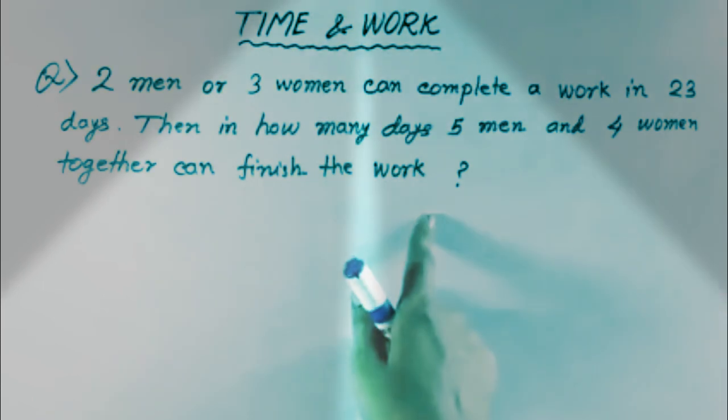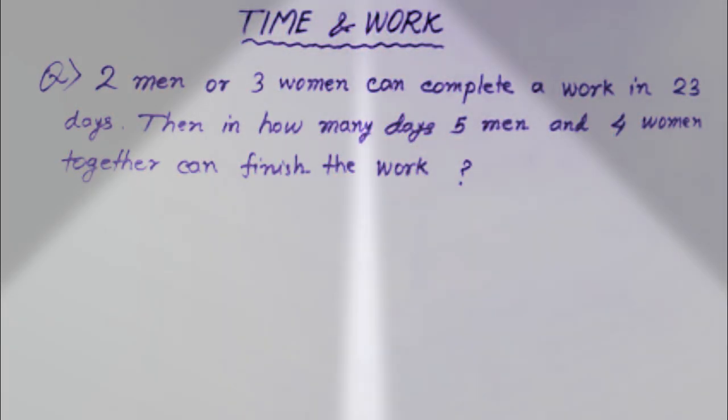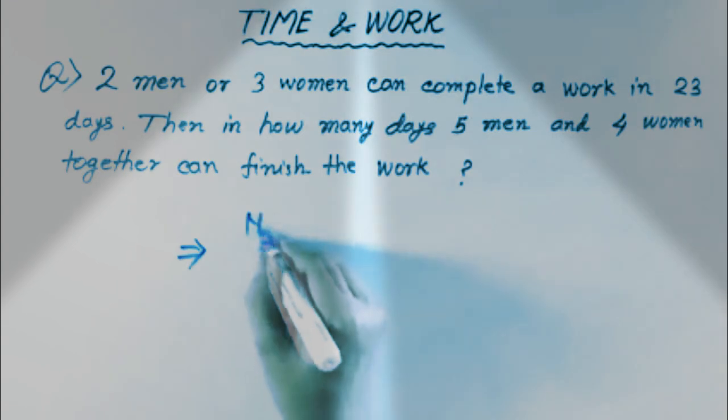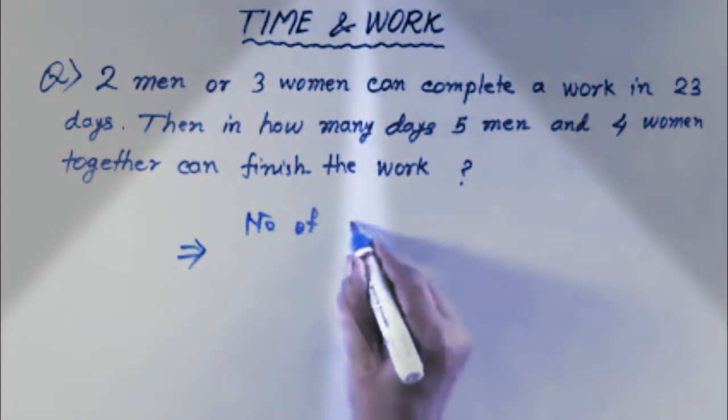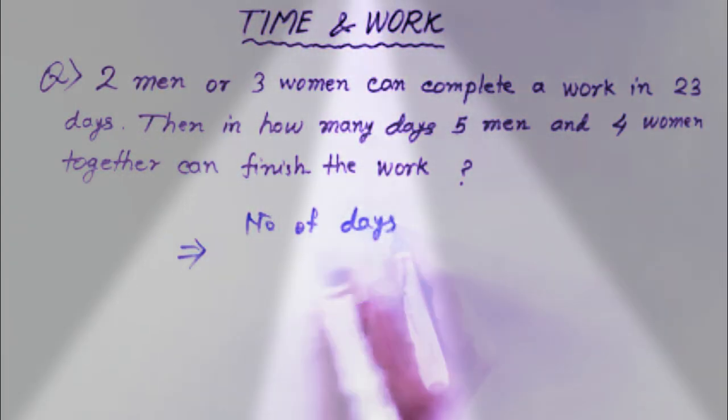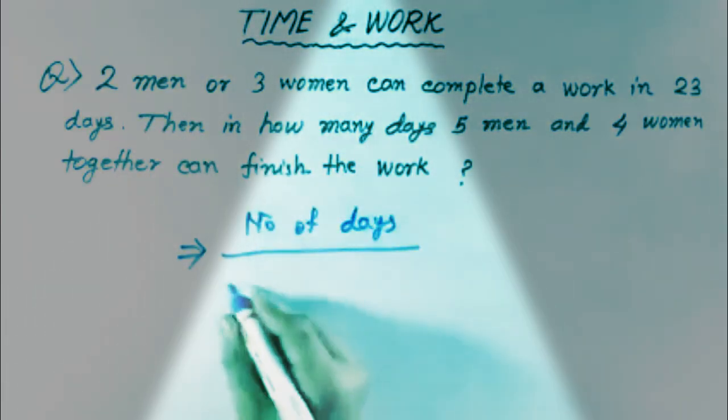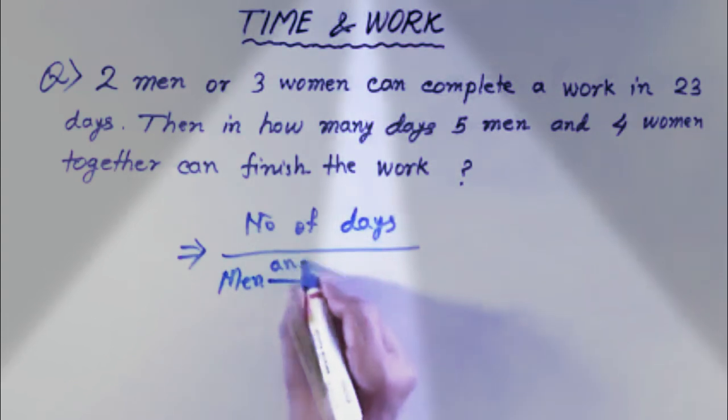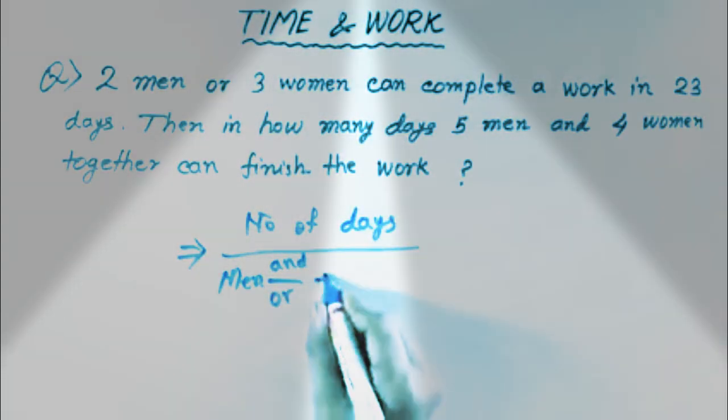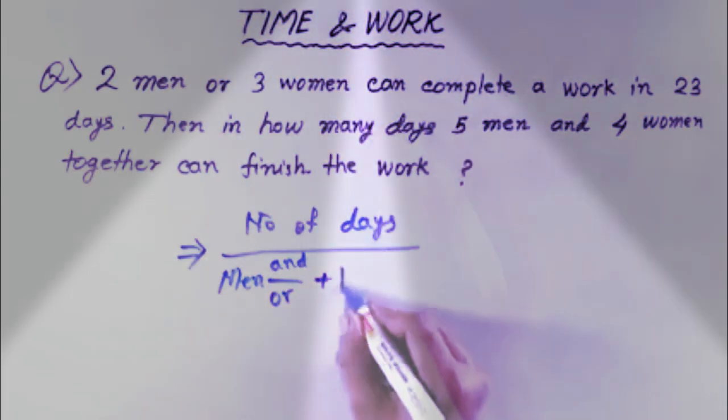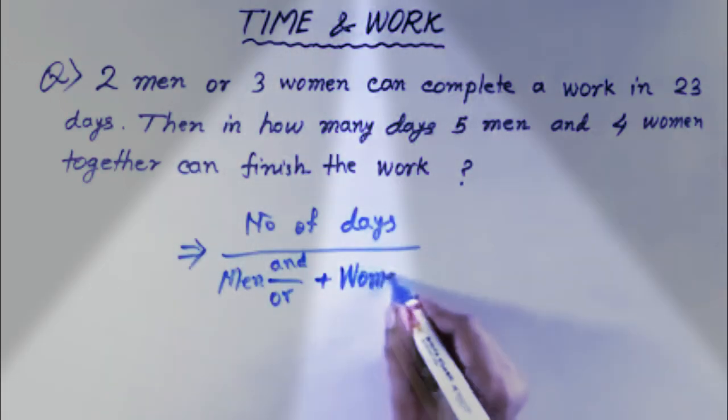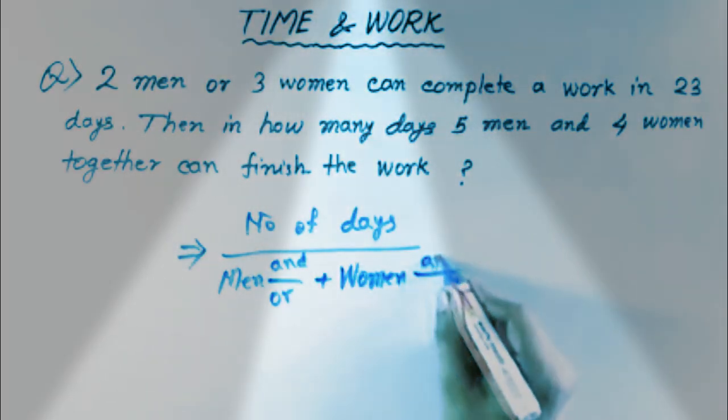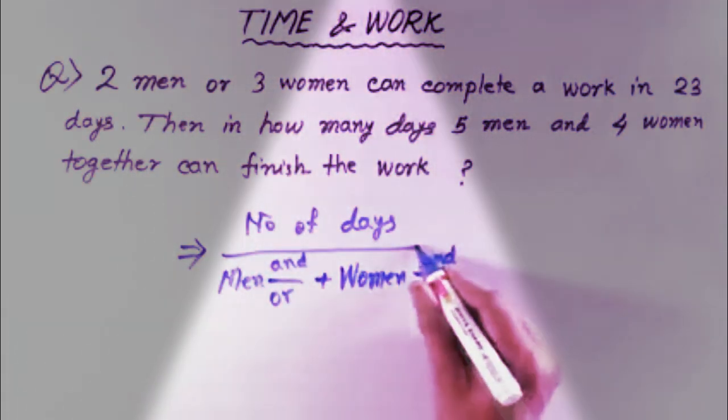Two men and three women can complete the work in 23 days. So we need to find in how many days five men and four women together can finish the work. We need to find the number of days.